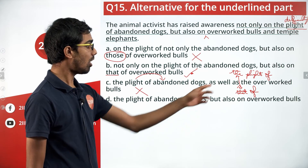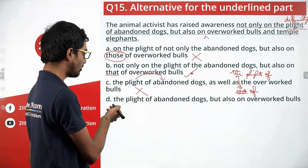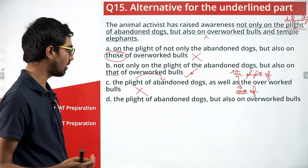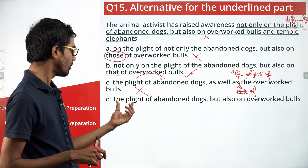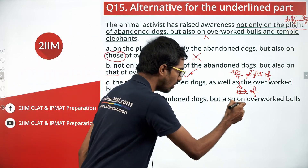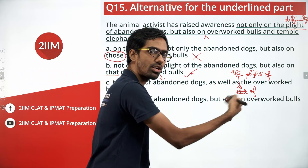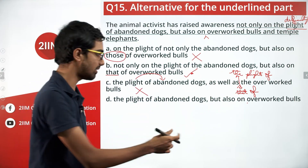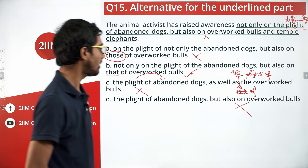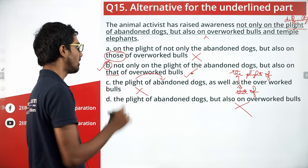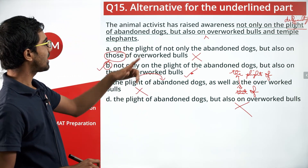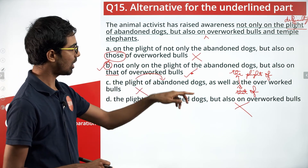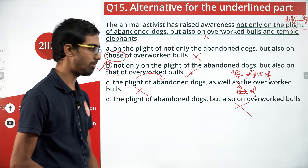Option D: 'The plight of abandoned dogs but also on overworked bulls' — 'on that of' or something of that sort should be mentioned. The same justification for why C is not the right answer applies to D as well. So D is also not the right answer. B fits in best. The animal activist has raised awareness not only on the plight of the abandoned dogs but also on that of overworked bulls — this fits in best.